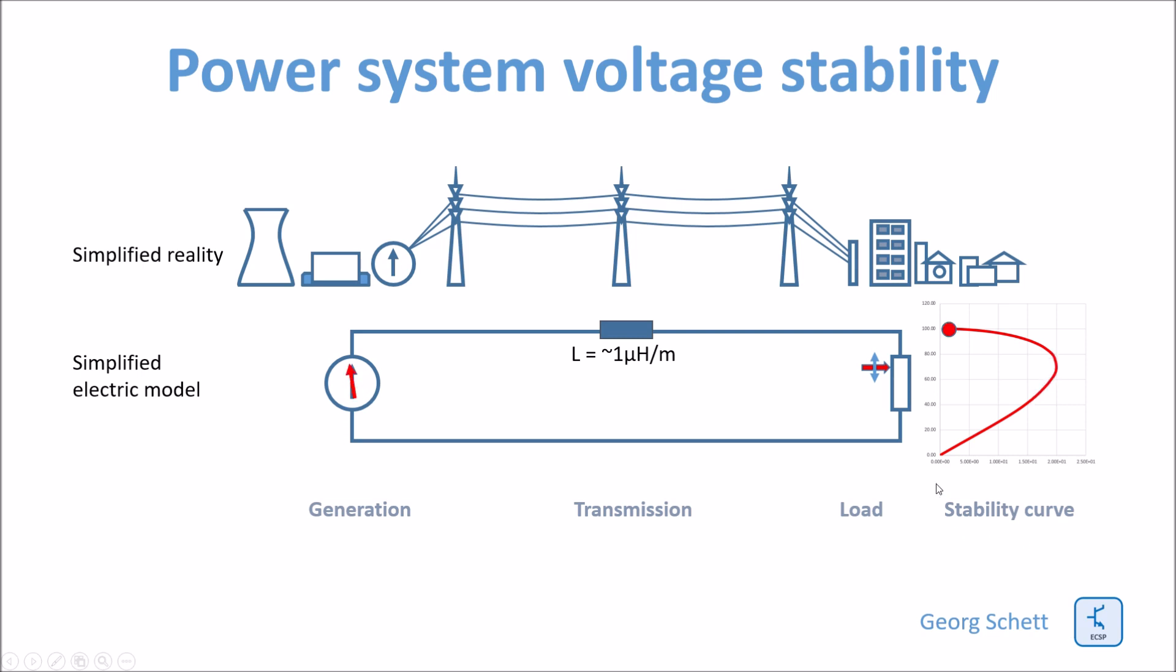What you would also observe is a phase angle shift between the voltage at the load and the voltage at the source. Above the tipping point, this phase angle would basically also collapse. So the generator would just be accelerated. It cannot evacuate the power anymore into the network. Therefore, the speed of the generator would accelerate.